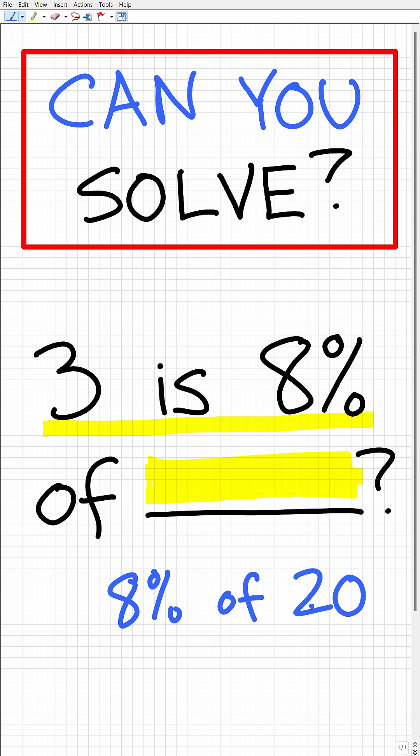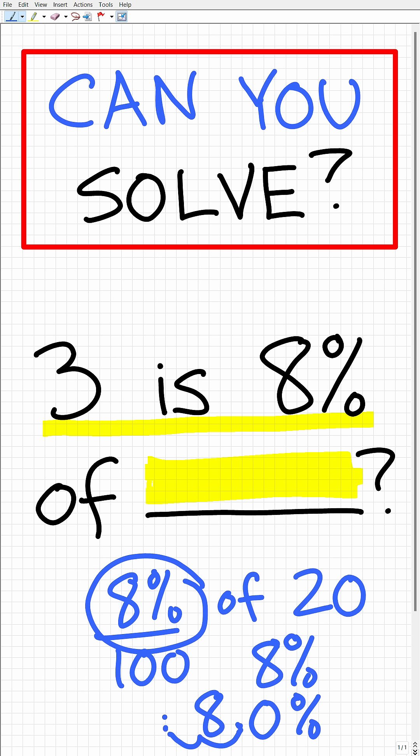The way we do that is to divide the percent by 100, which is the same thing as moving the decimal point over two places to the left. So eight percent, if I move the decimal point over two places to the left, I'm going to get point zero eight.